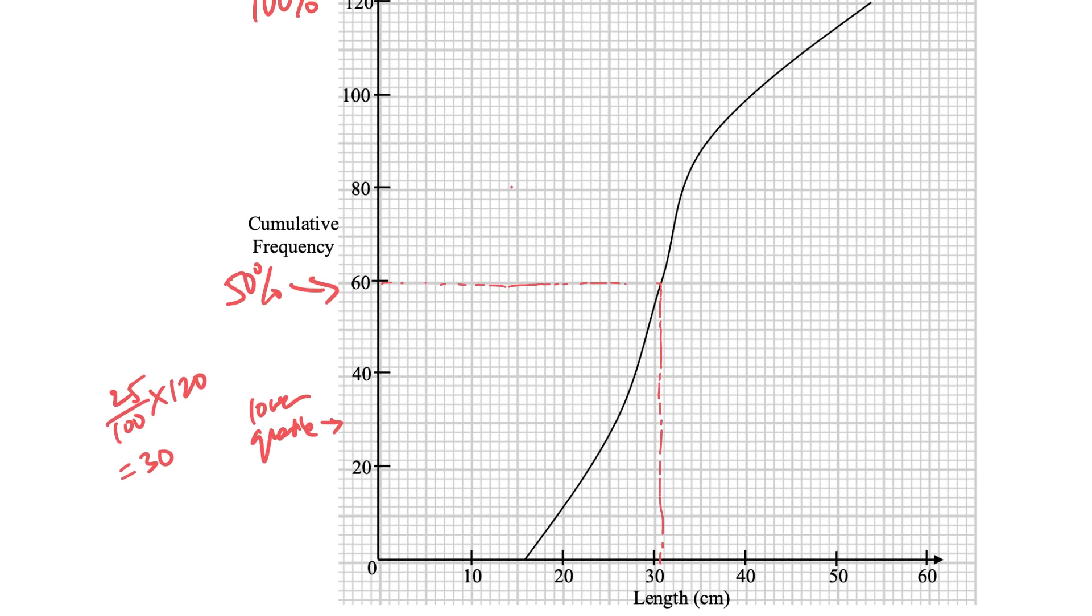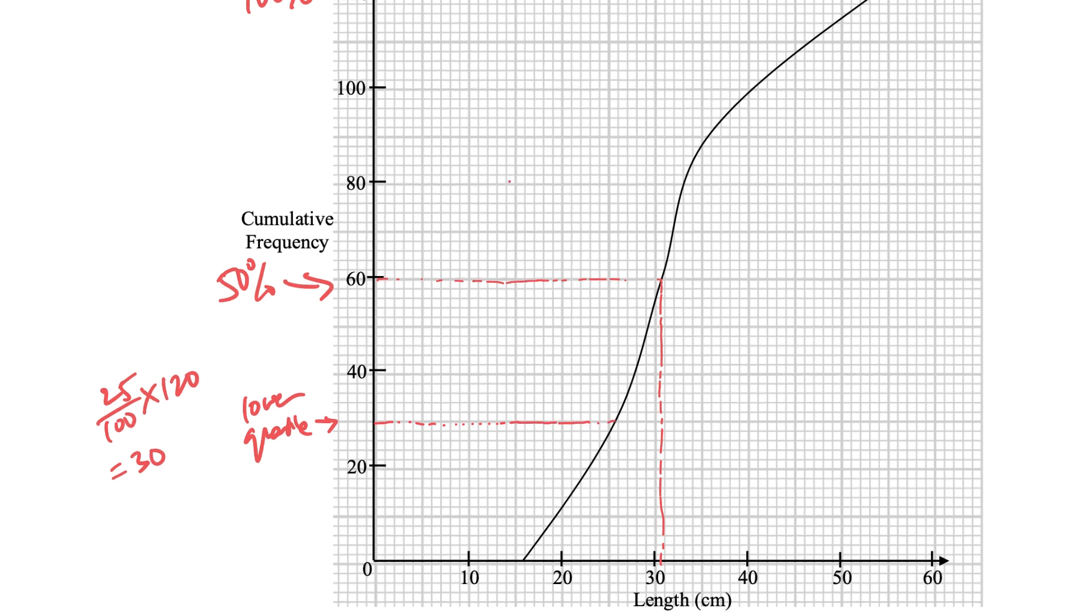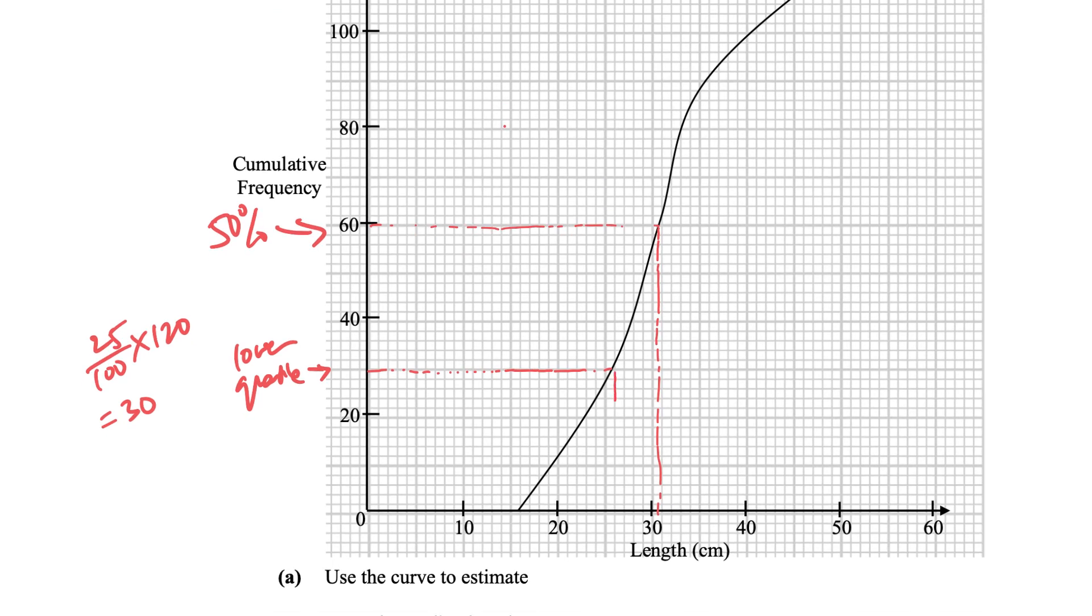Of course, it's not 30 itself, I need to, it's at the 30th fish, in this case, the length of 120 fishes. At the 30th percentile, where is it? 26, 26 cm.